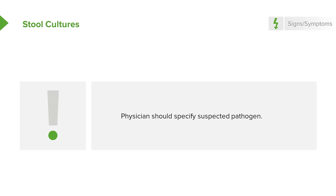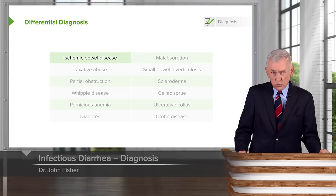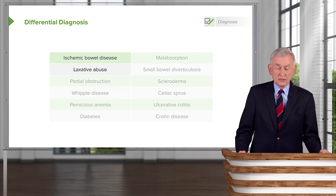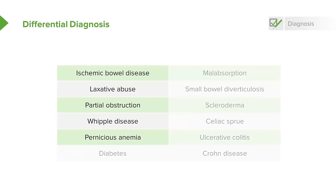What's in the differential diagnosis of infectious causes of diarrhea? One is ischemic bowel disease, found among the elderly. Some patients are addicted to laxatives. You can have diarrhea with partial bowel obstruction, Whipple disease, or pernicious anemia. Among diabetics, there is diabetic visceroenteropathy — some patients have nocturnal diarrhea, and it's a good question to ask a diabetic. There are also disorders causing malabsorption, small bowel diverticulosis, scleroderma-associated enteropathy, celiac sprue from gluten intolerance, and ulcerative colitis and Crohn's disease.